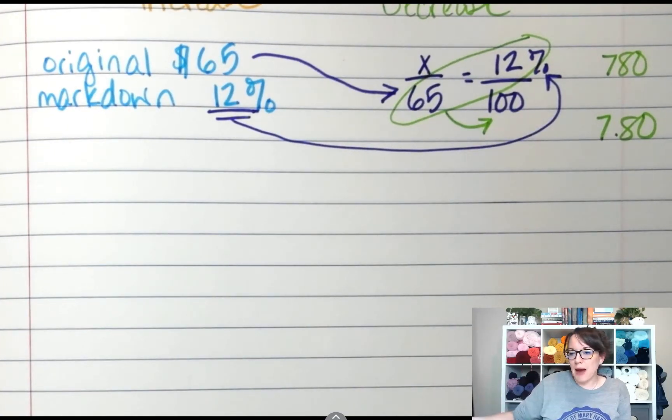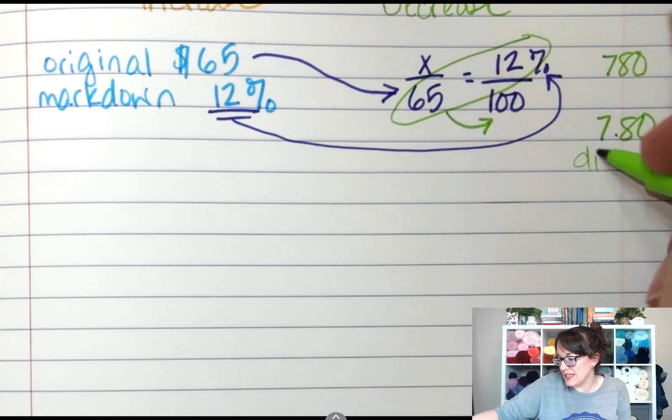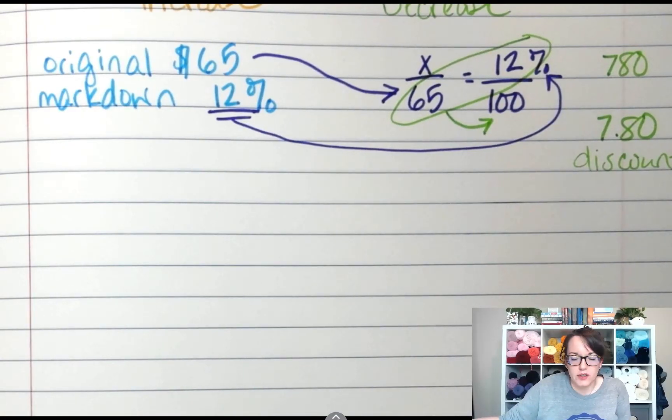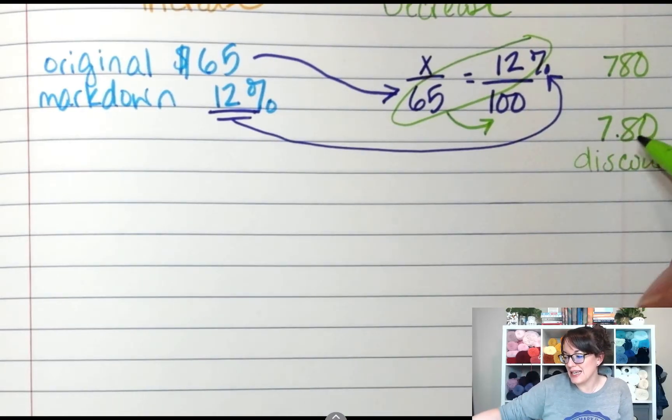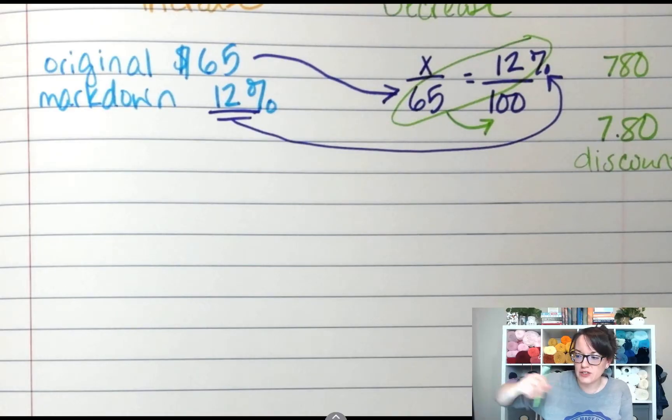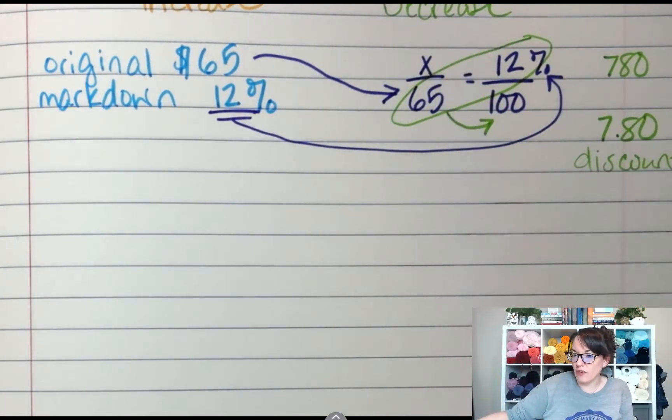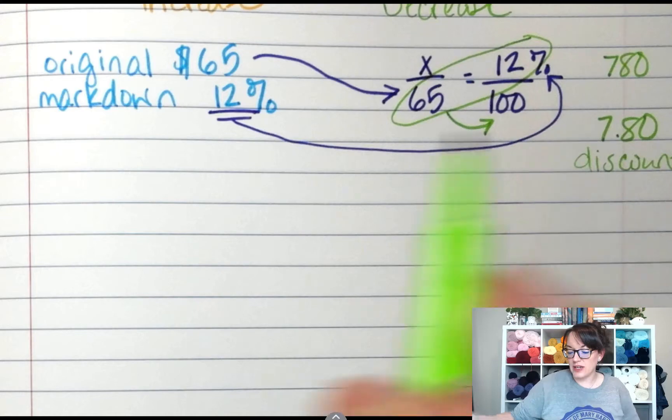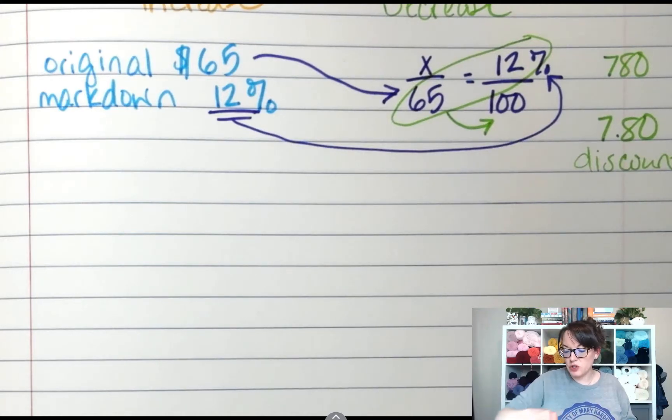This is my markdown. This is how much I'm going to take off the new price. This is my discount or sale or something. It's going to go down this much because this is the difference. So from percent of change, we found the difference. So it has to go down. So my next step, I have to subtract these two.